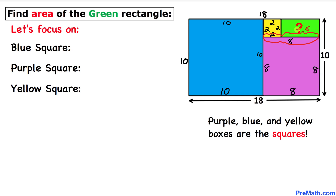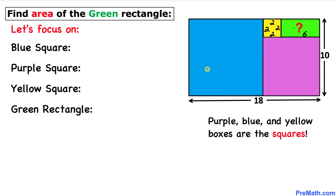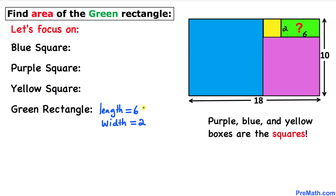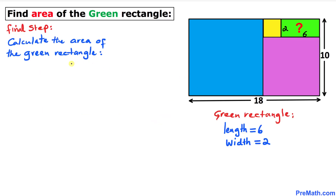Now let's focus on the green rectangle. We know that this side is 6 units and this side is 2 units. So the length of the green rectangle is 6 and the width is 2.